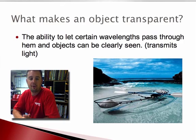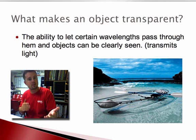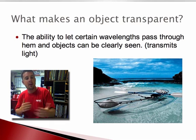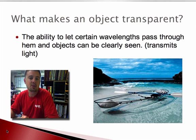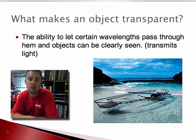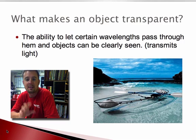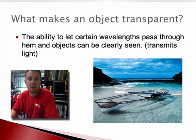Let's take a look at the first one. What makes an object transparent? If an object is transparent, it will allow certain wavelengths to pass through and objects can be seen clearly. For example, this canoe you see here on the screen transmits light and allows light to pass through it clearly without affecting the light rays.